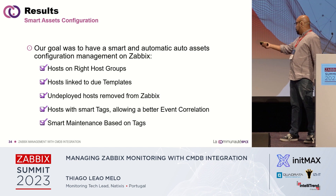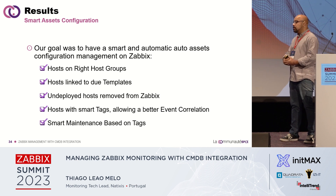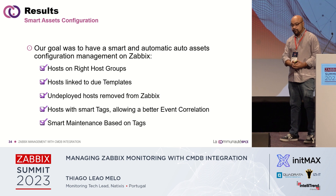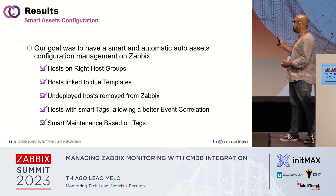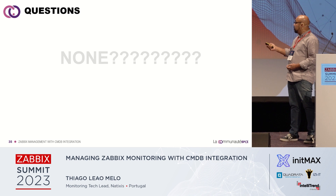The results are: hosts are placed in the right host groups, hosts are linked to the correct templates, undeployed hosts are removed from Zabbix, and hosts have smart tags enabling better event correlation. You can imagine the volume of information retrievable from CMDB — all of it can be used for event correlation and smart reports. For example, during a massive incident you can filter by Linux or Windows hosts within a specific data center or rack. Smart maintenance based on tags is also a key benefit.